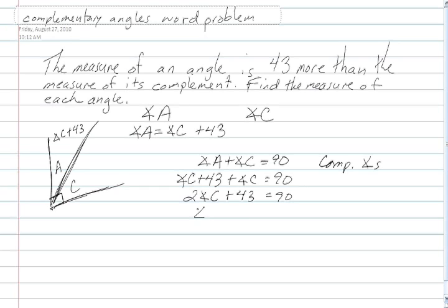And angle C, or twice angle C, is equal to 47. Angle C then is 23 and a half.